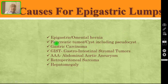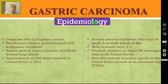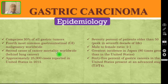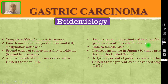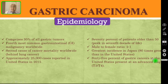You have to differentiate gastric carcinoma from all other causes. Coming to the epidemiology: gastric carcinoma comprises 95% of all gastric tumours — that is the adenocarcinoma. It is the fourth most common GI malignancy worldwide and the second cause of cancer mortality behind lung cancer. Approximately 25,000 cases were reported in the US in 2015. 70% of patients are older than 50 years, with a peak in the seventh decade. Male to female ratio is 2:1. The greatest incidence is in Japan — 80 times greater than in the US — and 65% of gastric cancers in the US present at an advanced stage, either T3 or T4.